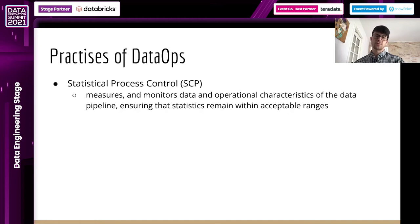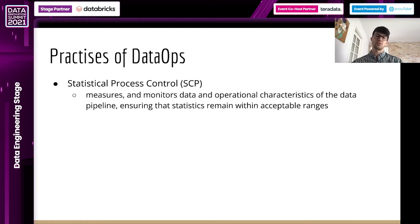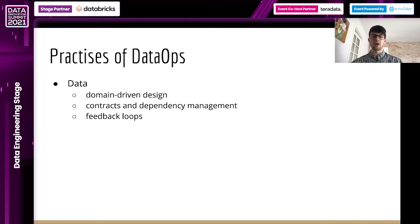Statistical process control comes from lean manufacturing and it's about measuring the quality of the data, but also the data pipelines, the KPIs. And on top of that, we have alerting that allows us to take manual actions whenever necessary.